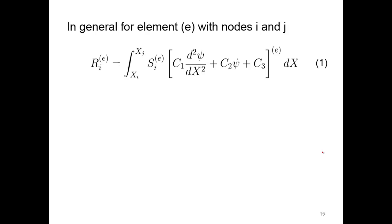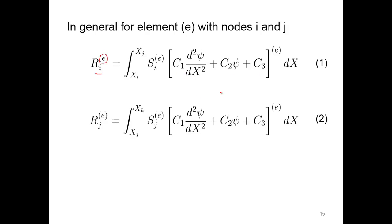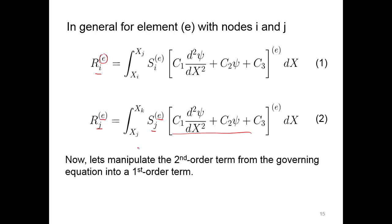In general, for element E with nodes I and J, the residual at node I for a given element is the shape function of that node in that element times the governing differential equation. The residual for node J in that element is the shape function of node J in that element times the governing differential equation, integrated over the distance from I to J. Those are our two different residual equations. Now let's manipulate the second-order term from the governing equation into a first-order term.